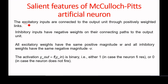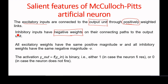An excitatory input means the interconnecting weight from the input unit to the output unit is positively weighted. If the weight is negative from the input unit to the output unit, we call it an inhibitory input. Excitatory inputs make the neuron fire, whereas inhibitory inputs do not allow the neuron to fire. Excitatory inputs have positive weights, whereas inhibitory inputs have negative weights.